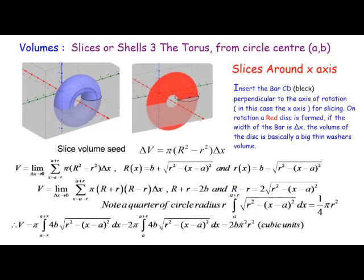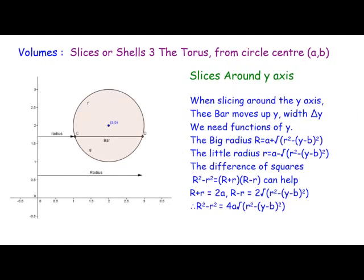We can see the volume was 2Bπ²R² — not too bad; we used the quarter-circle idea. Now we're going to do slices around the Y-axis, and the radii are obviously going to change. Big R plus little r is now 2A. The bar, being perpendicular to the Y-axis, moves up and down with width δy, so we need functions of y in our integrals.